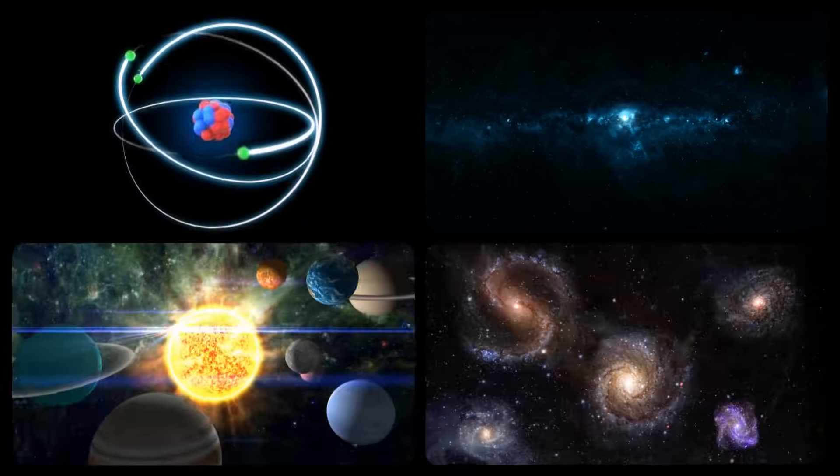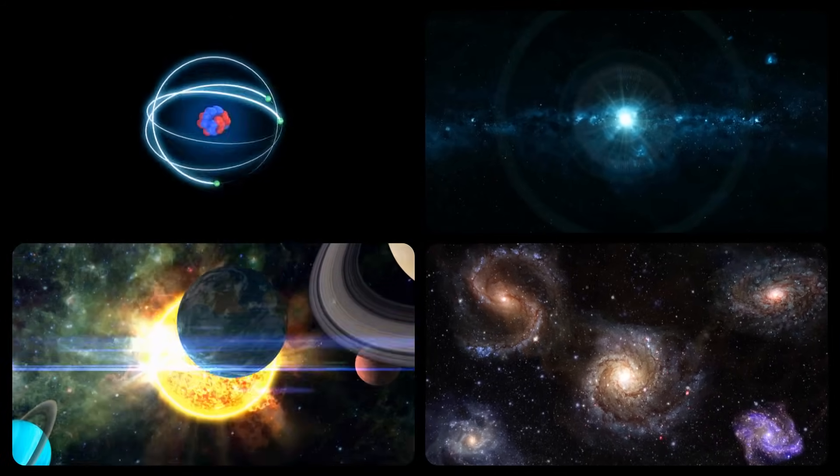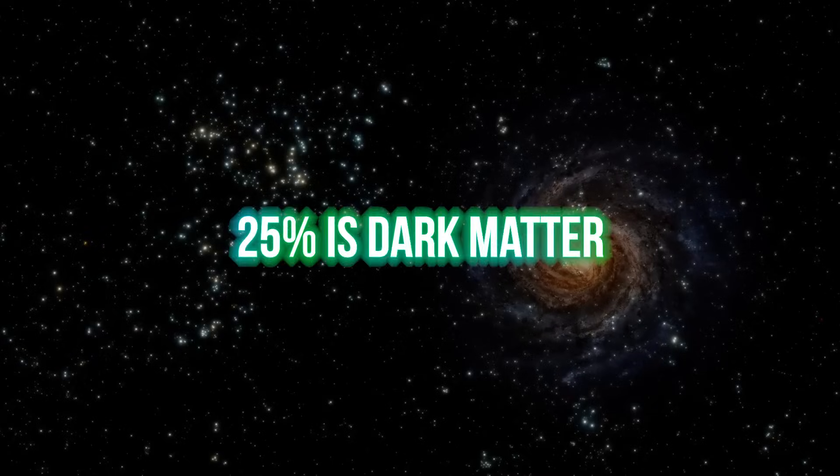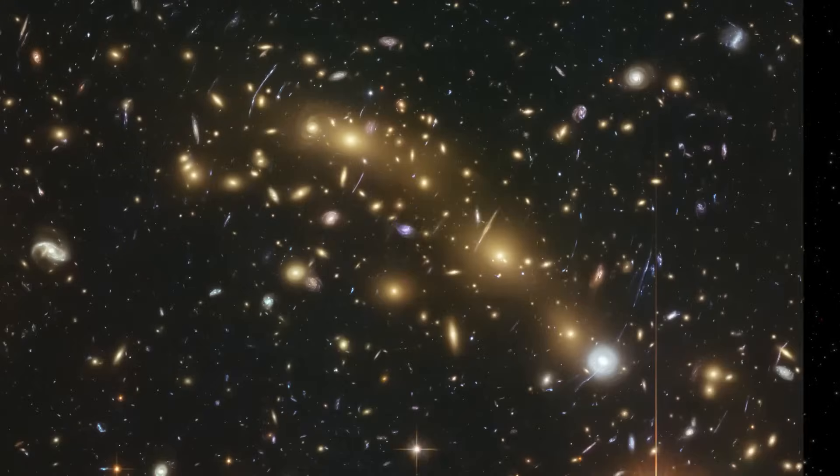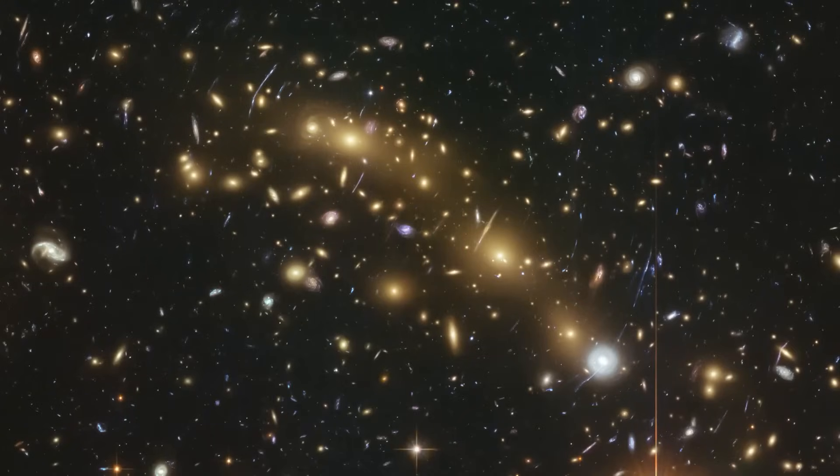Penrose's skepticism extends to the existence of dark matter, a substance that clashes with his alternative CCC theory. When we consider the matter we are familiar with – atoms, stars, galaxies, planets, and everything around us – it constitutes less than 5% of the known universe. About 25% is dark matter and the remaining 70% is dark energy. Both dark matter and dark energy are invisible components of the universe.